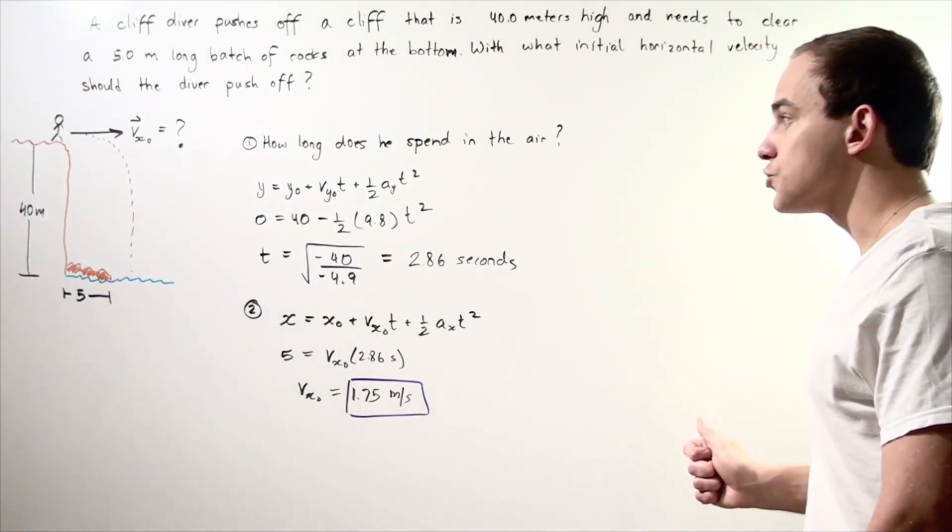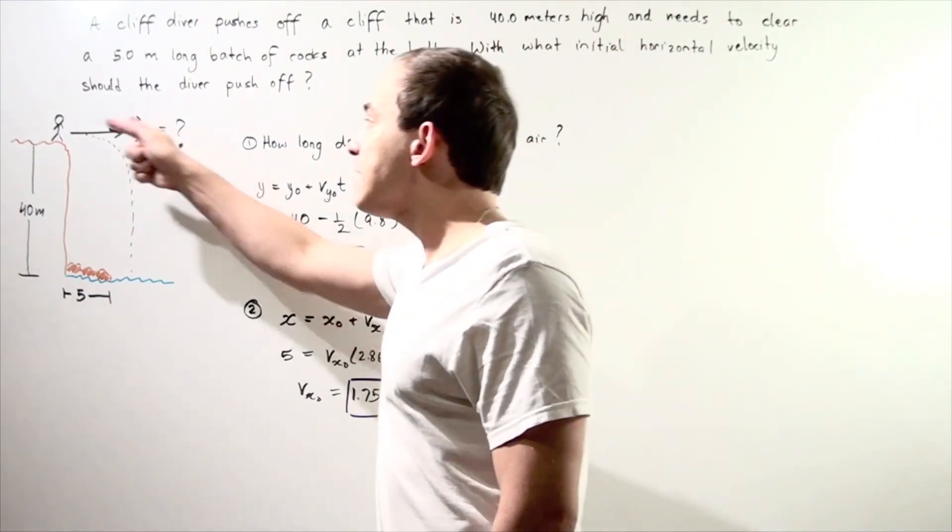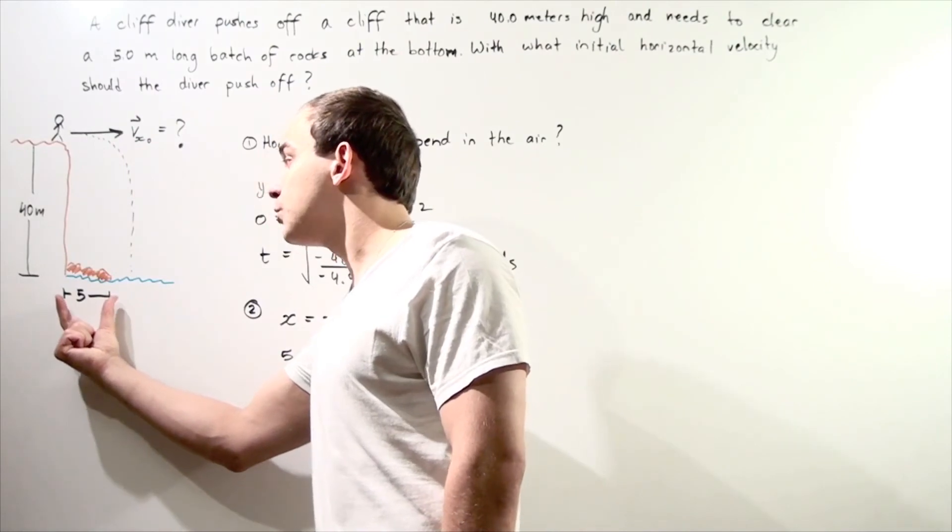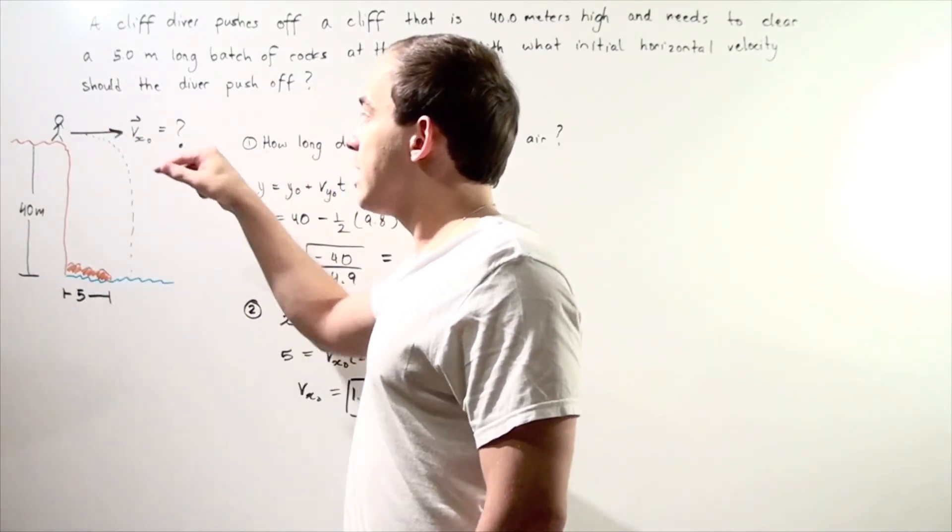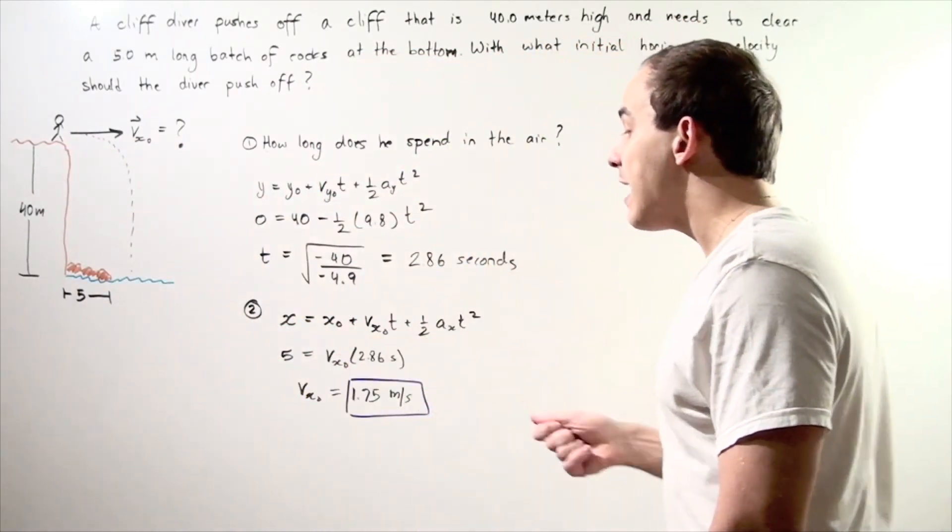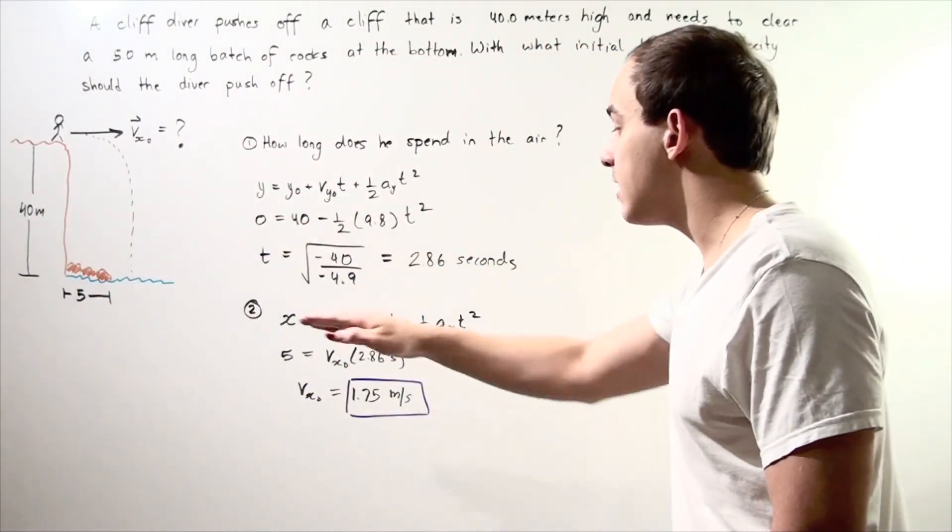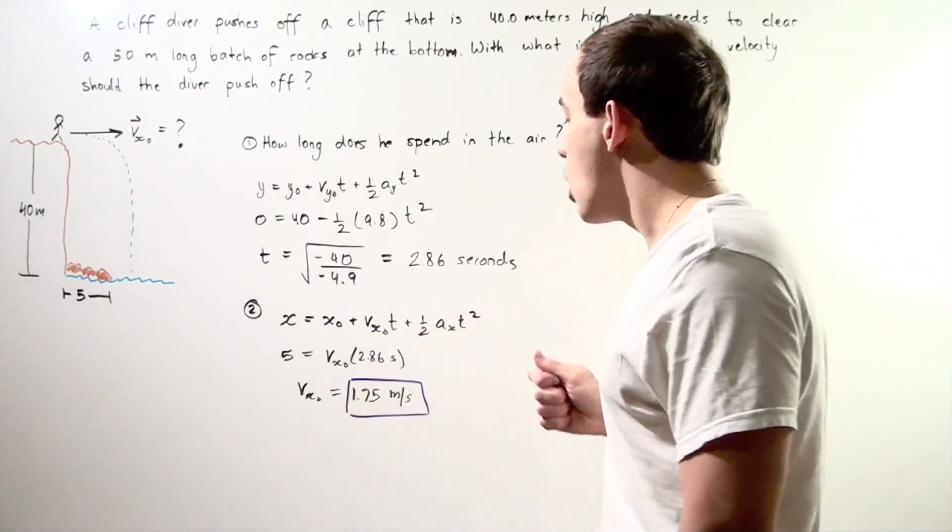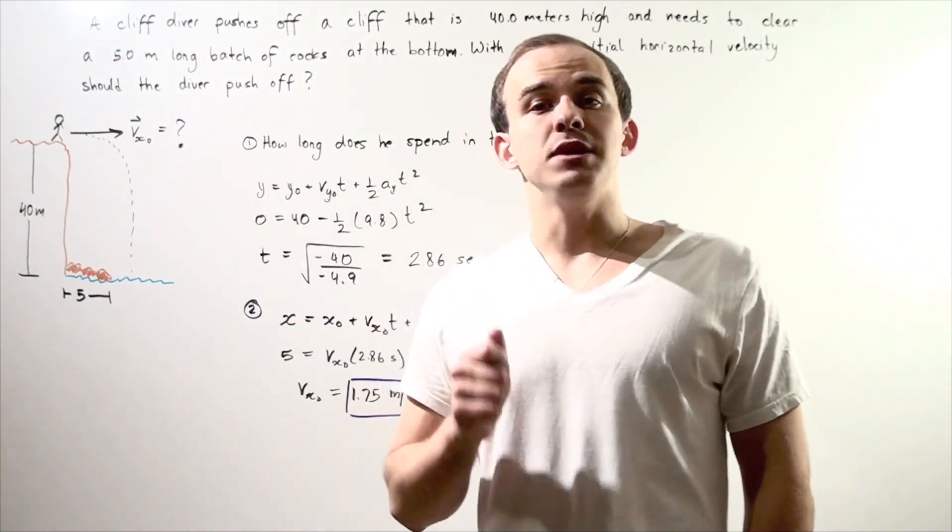In other words, in order for the diver to clear this batch of rock that is 5 meters long, when they dive off this 40 meter high cliff, they need to have an initial velocity along the x-axis of 1.75 meters per second.